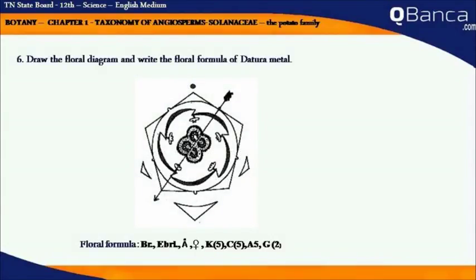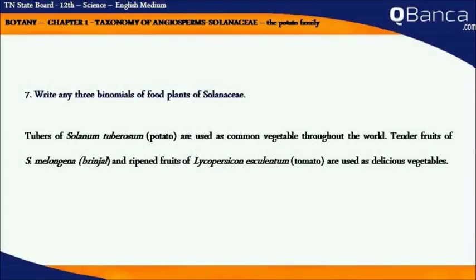Draw the floral diagram and write the floral formula of Datura metal. Floral formula: Br Brl A K(5) C(5) A5 G(2).